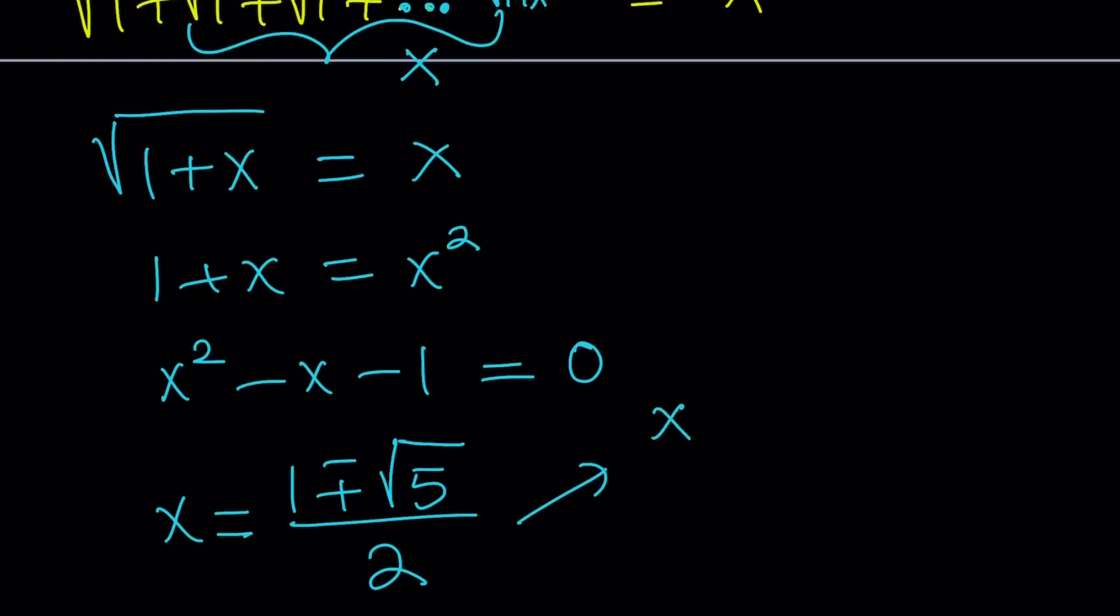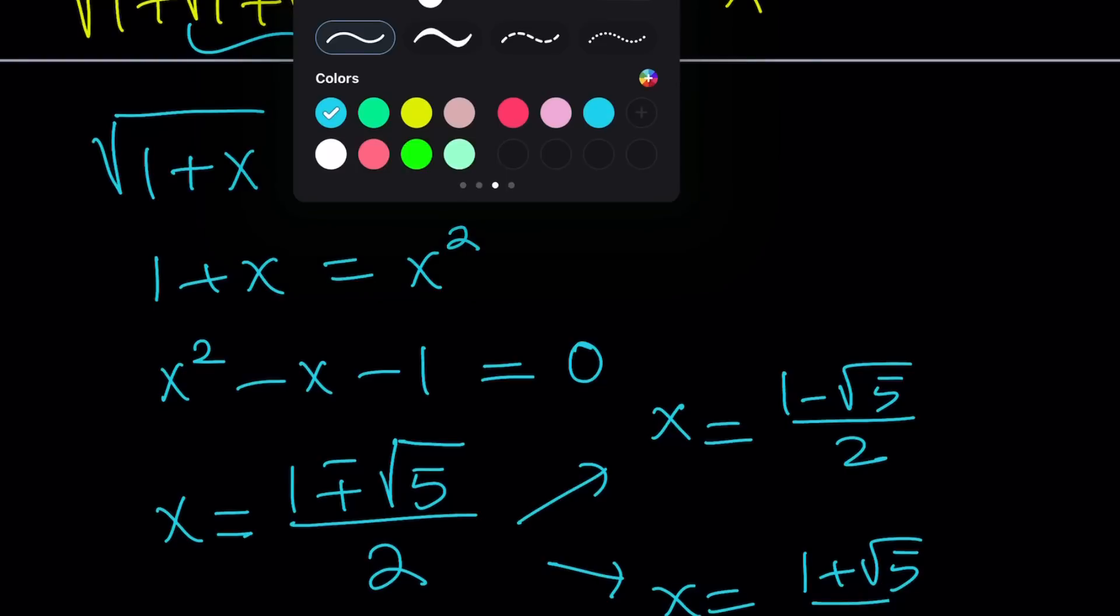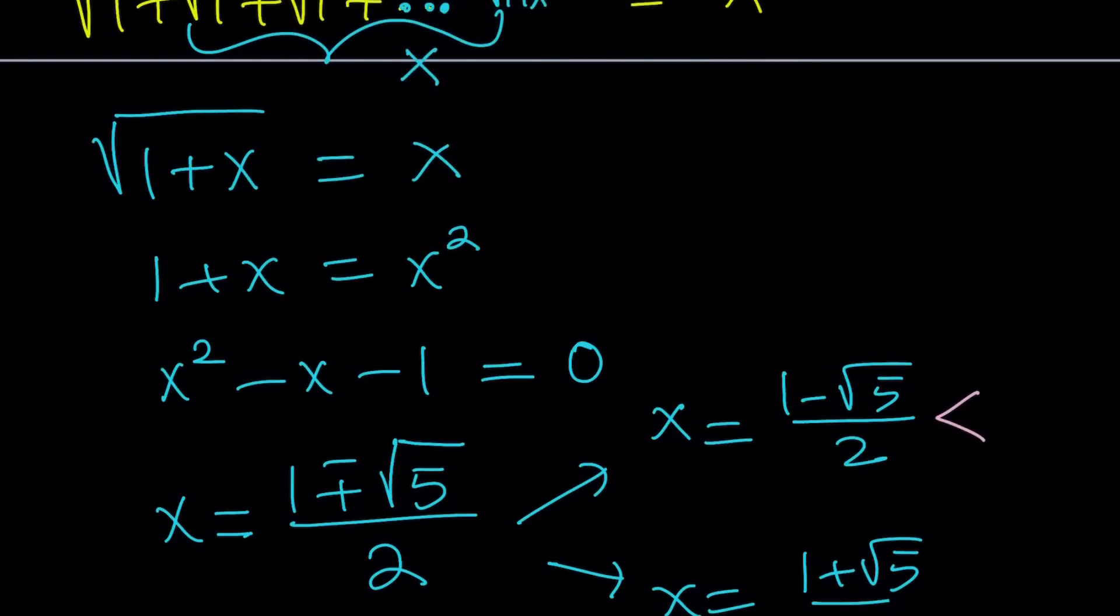This quadratic equation has two solutions. One of them is, you can call it x sub 1 if you want, I won't, x equals 1 minus root 5 over 2, and the other one is 1 plus root 5 over 2. Unfortunately, maybe fortunately, 1 minus root 5 is less than 0. Therefore, this is a negative quantity.